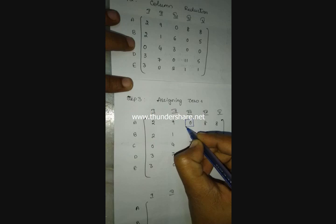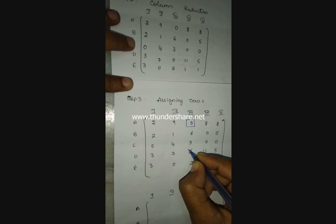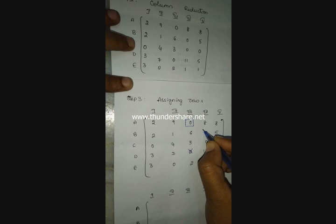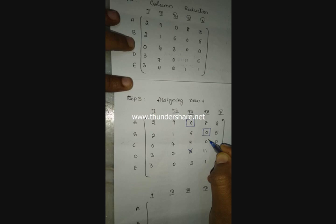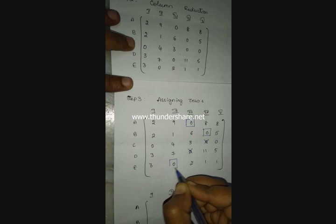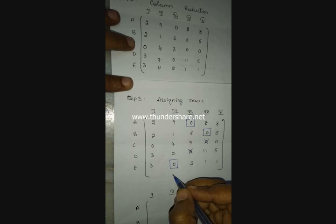For assigning zeros, check each row for a single zero. The first row has a single zero — assign it, and cancel zeros in the corresponding column. The second row has a single zero — assign it, and cancel zeros in the corresponding column. The third row has multiple zeros, so skip for now. The fourth row has no zeros. The fifth row has a single zero — assign it and cancel the corresponding column.